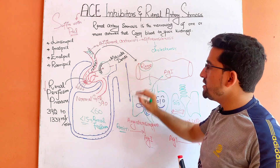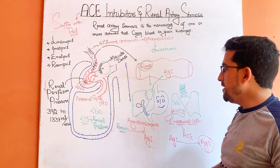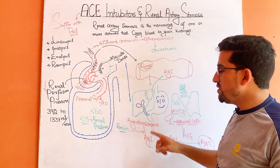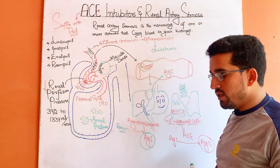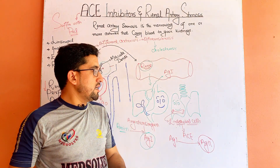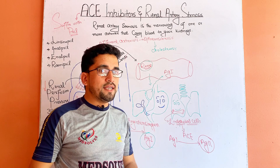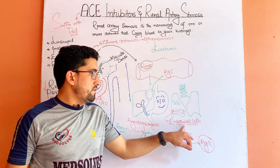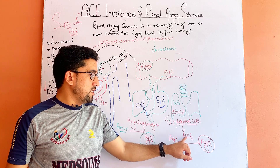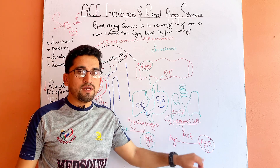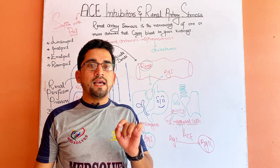This renin is released into the blood vessels and is carried towards the liver. In the liver, renin converts angiotensinogen to angiotensin 1, and this angiotensin 1 is then carried towards the lungs. In the lungs, there is an enzyme called ACE — angiotensin-converting enzyme — normally present on the surface of endothelial cells. This ACE converts angiotensin 1 to angiotensin 2.